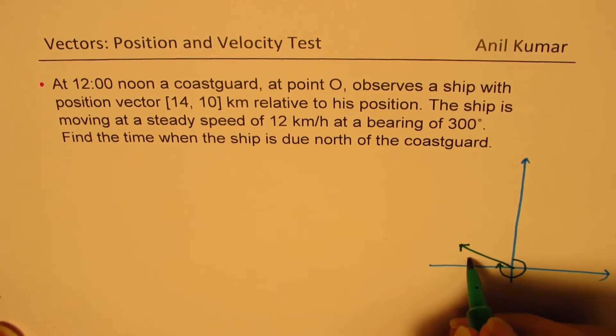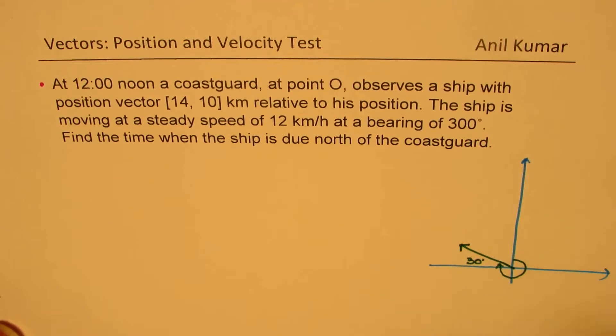This is 30 degrees. 270 plus 30 gives you 300. So that is the direction in which the ship is moving.